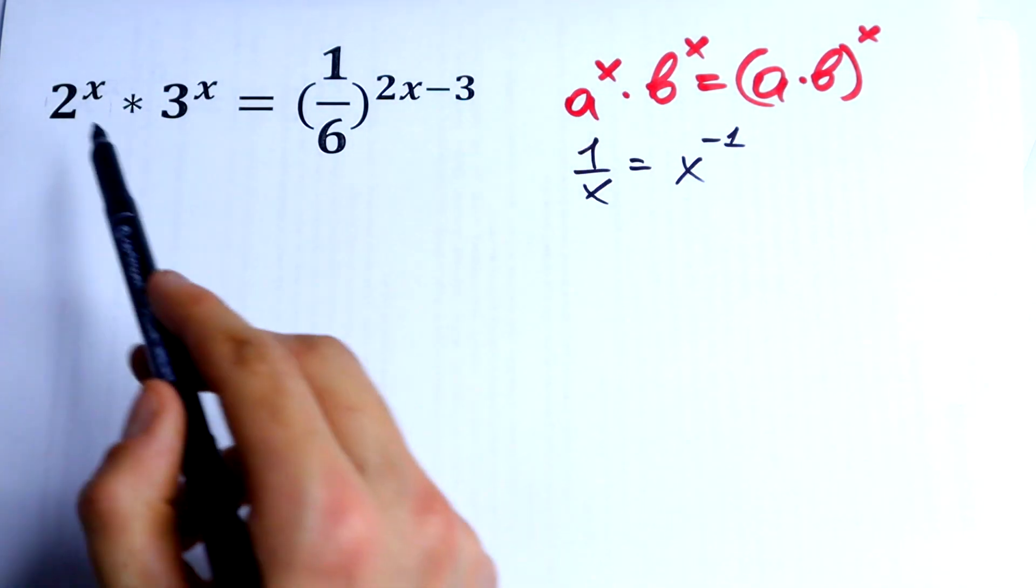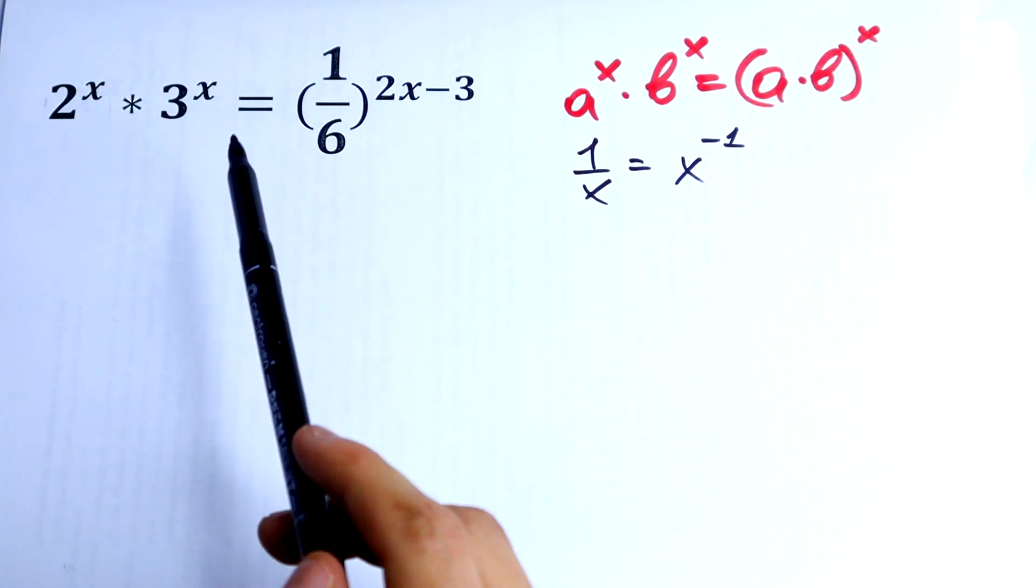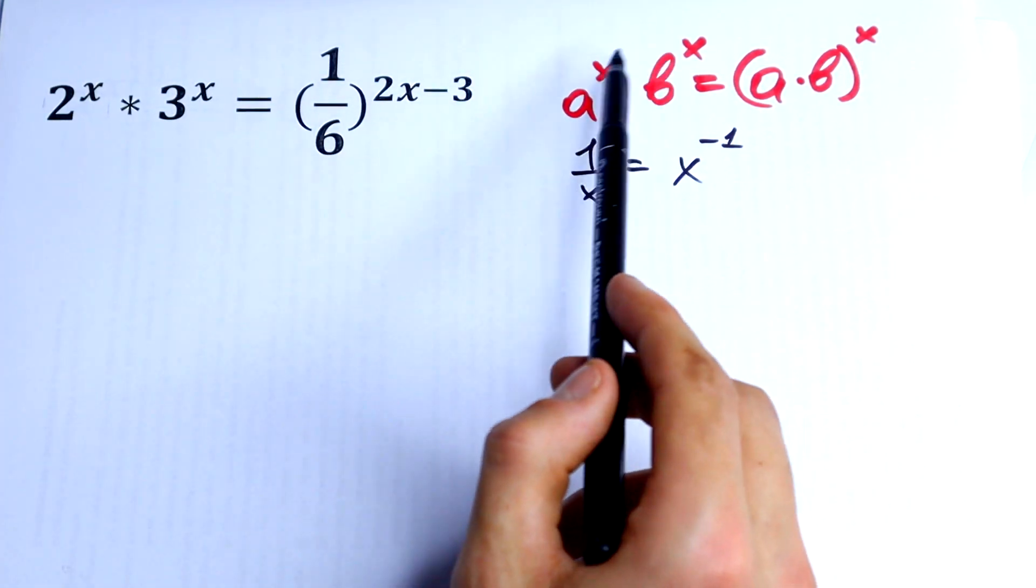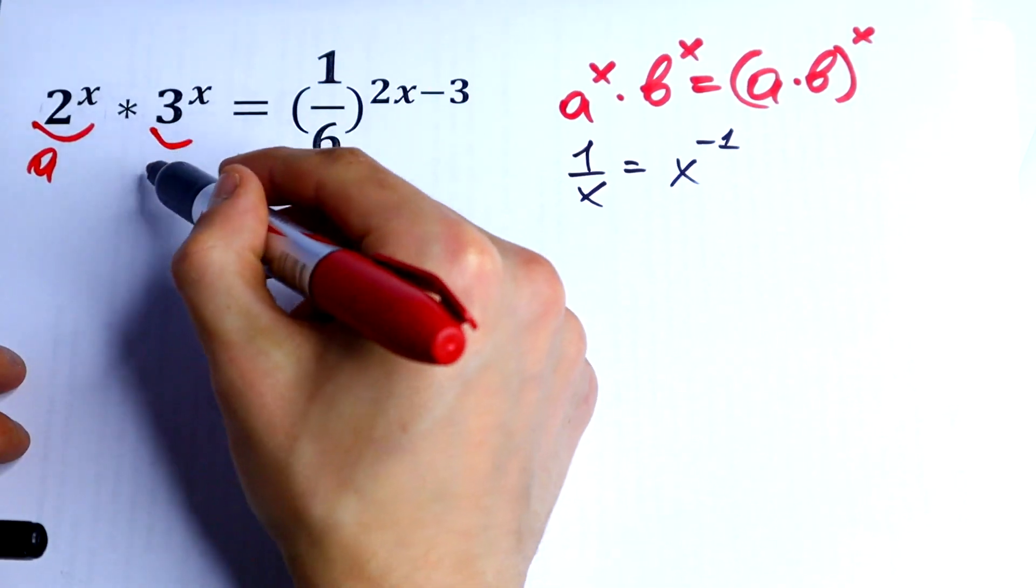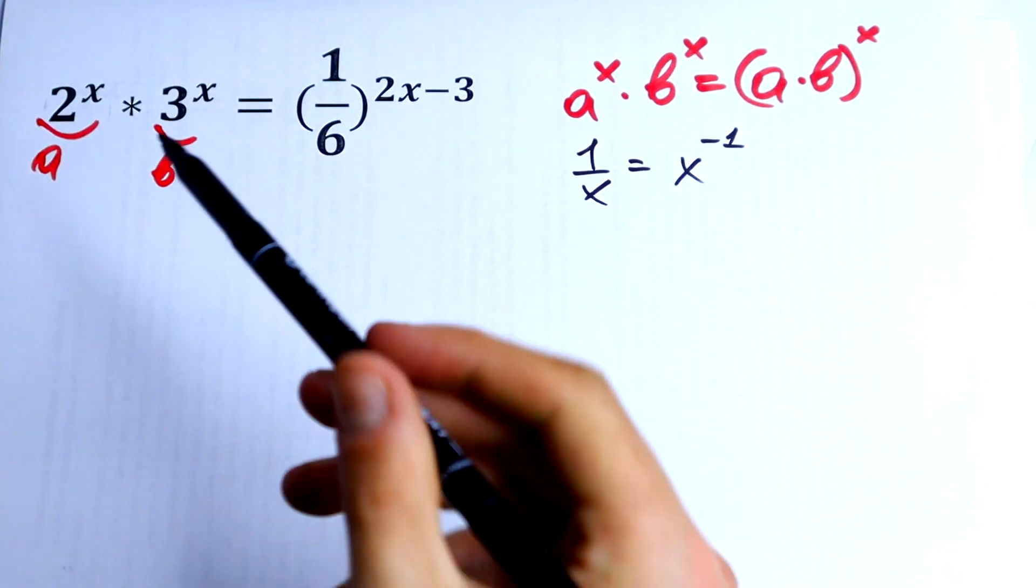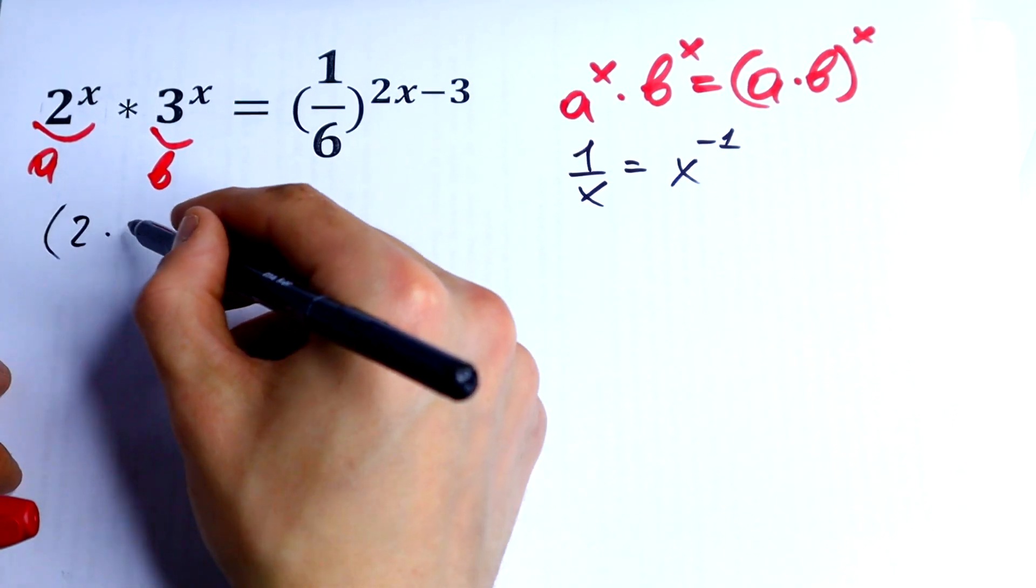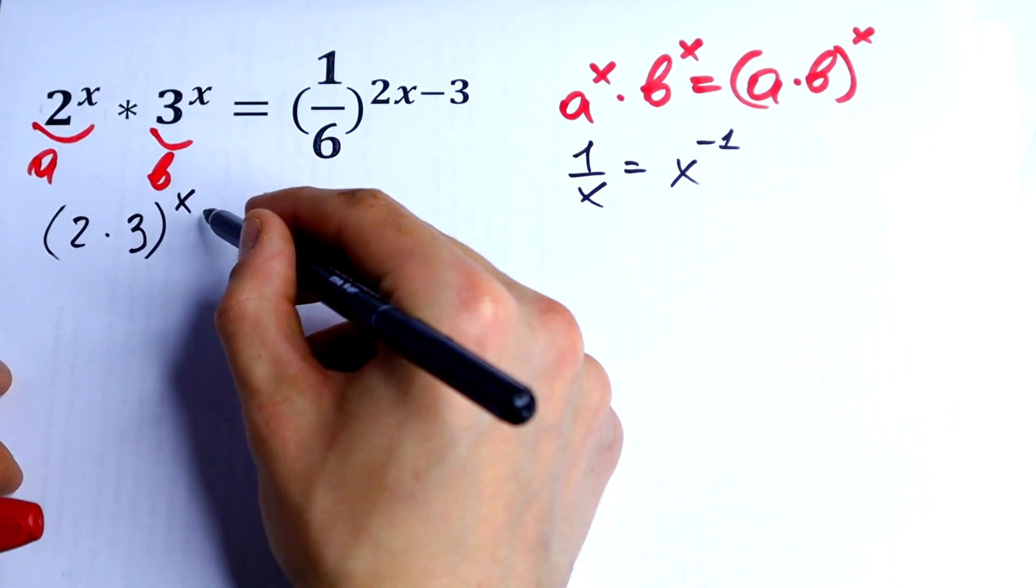So let's use this rule. X stays the same, and here a is 2 and b is 3. So we'll have (2 times 3)^x, which equals